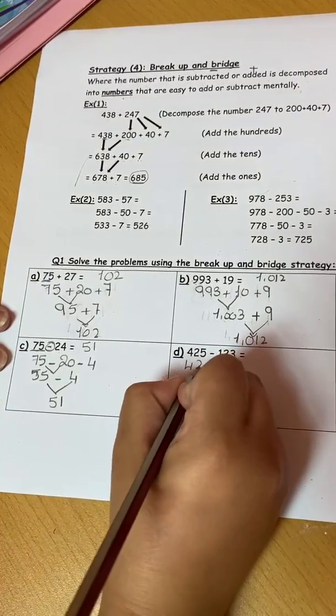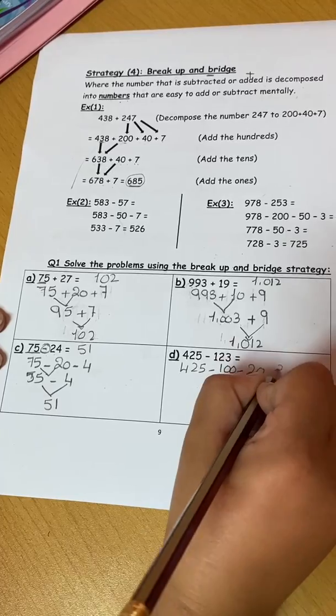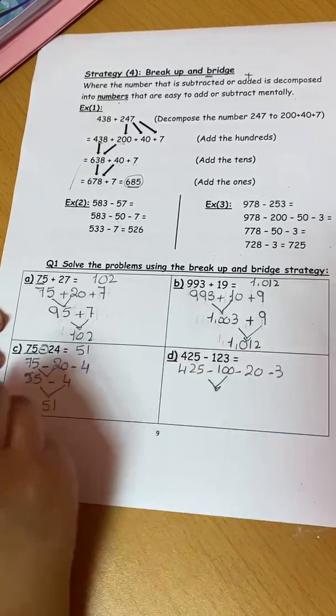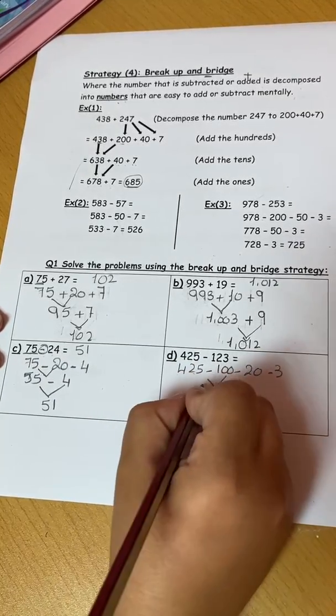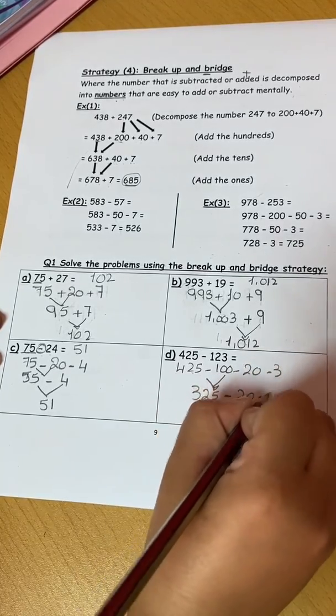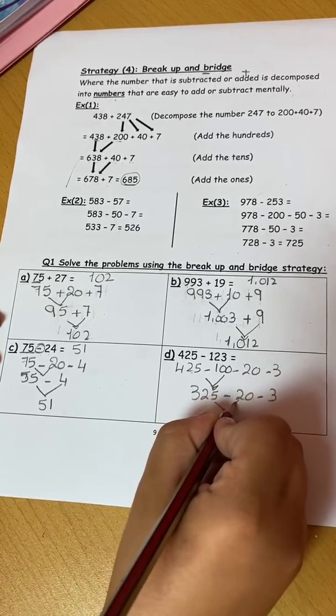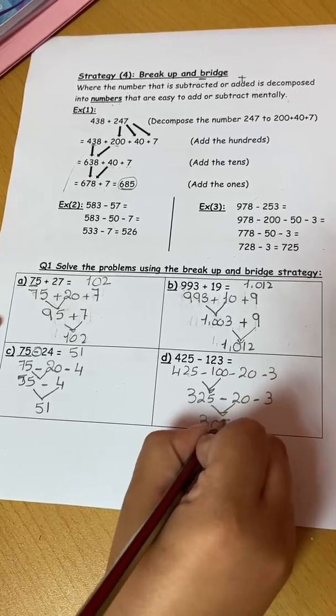Here 425 minus 100 minus 20 minus 3. I can take those, 425 minus 100 I will have 325 minus 20 minus 3.